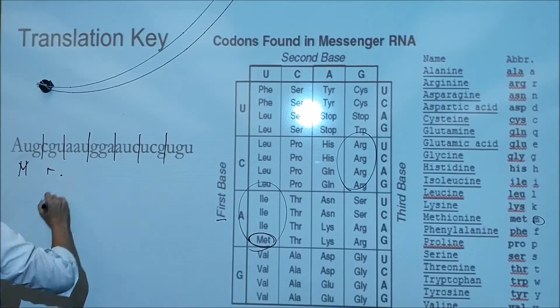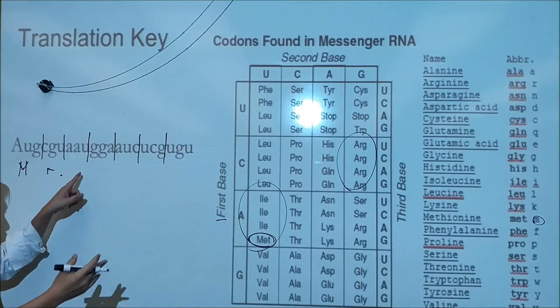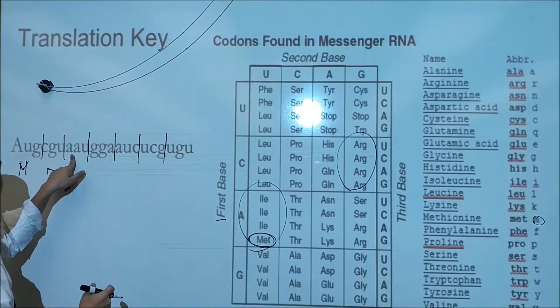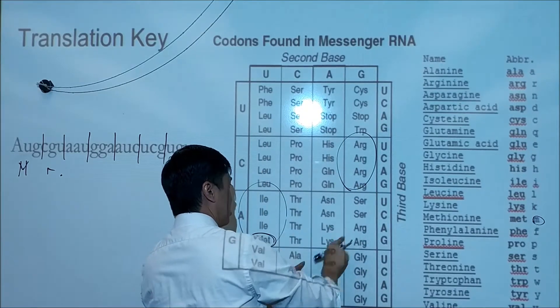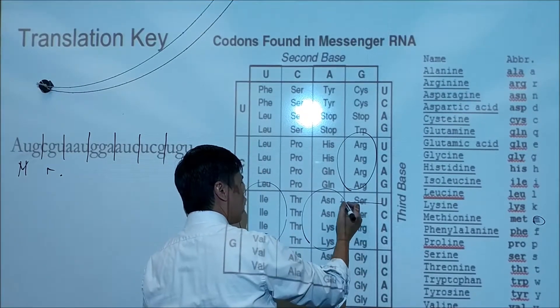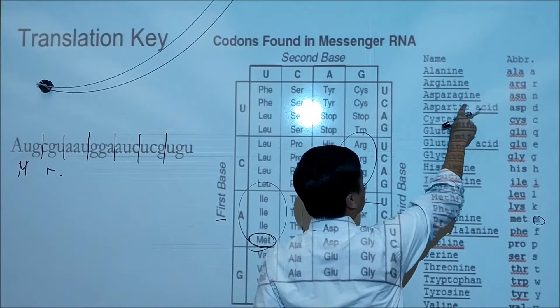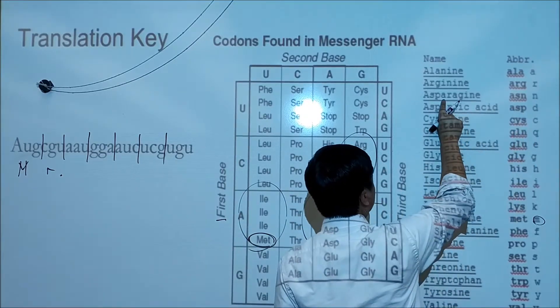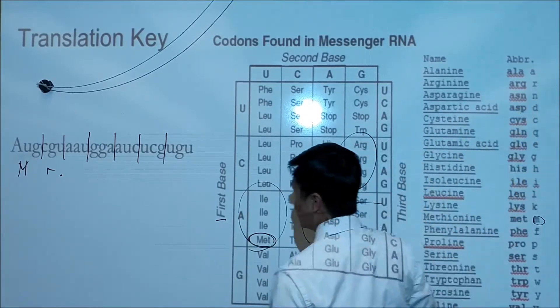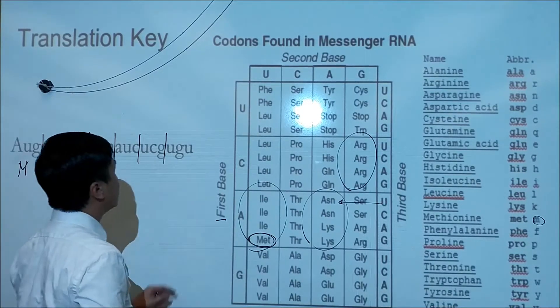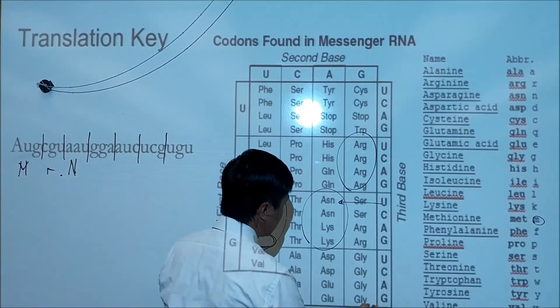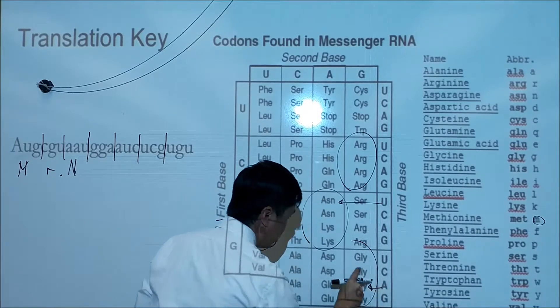Let's do two more so you can see my lousy name. AAU: A is right here, U is right here—that's N, asparagine. And lastly, GGA: there's G, there's A...